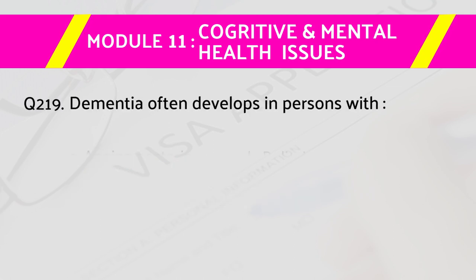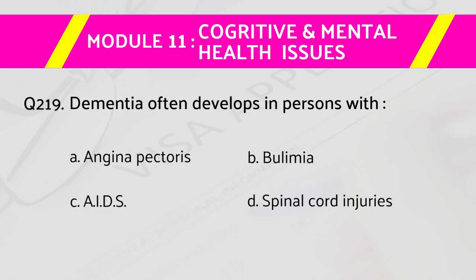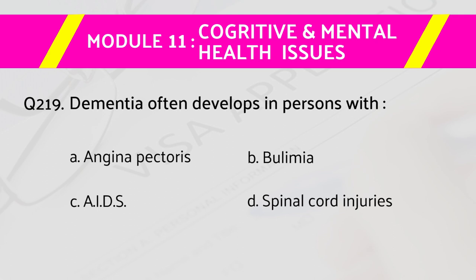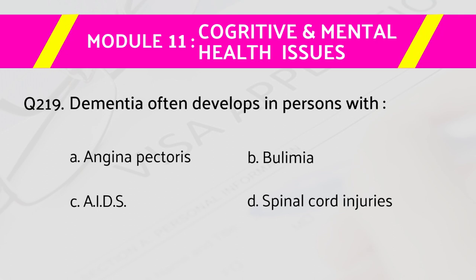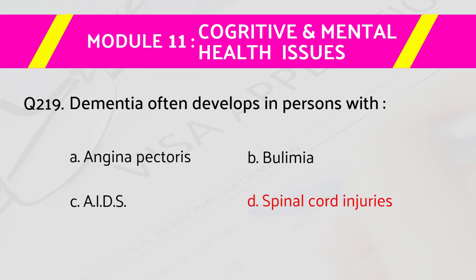Question number 219: Dementia often develops in persons with — answers are: a) angina pectoris, b) bulimia, c) AIDS, d) spinal cord injuries. The right answer is d) spinal cord injuries.